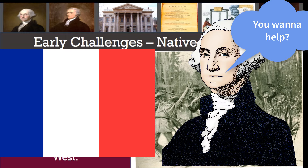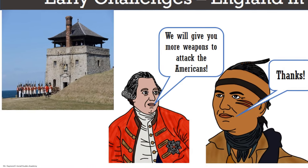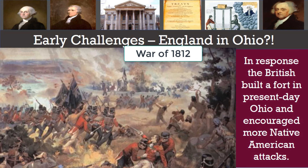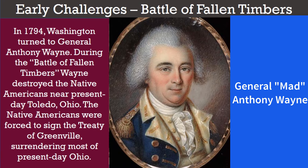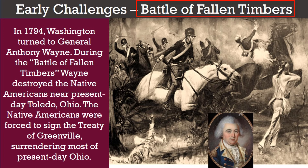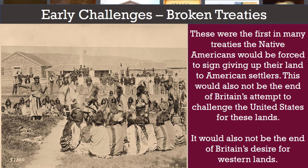The Americans turned to France hoping their alliance might help them gain control of the West. However, in response, the British built a fort in present-day Ohio and encouraged more Native American attacks. This would not be settled until the War of 1812. In 1794, Washington turned to General Anthony Wayne, who had earned the nickname Mad Anthony in the Revolutionary War for his military exploits and fiery personality. During the Battle of Fallen Timbers, Wayne destroyed the Native American forces near present-day Toledo, Ohio. The Native Americans were forced to sign the Treaty of Greenville, surrendering most of present-day Ohio — the first of many treaties they would be forced to sign throughout the 1800s.